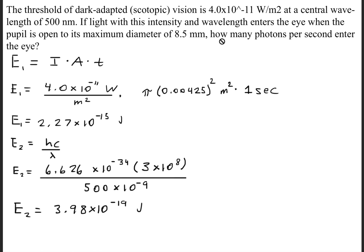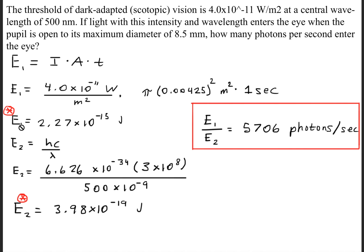Now the question is asking how many photons per second enter the eye. In order to do that, we're going to take the two energies and find the ratio between the two of them. We'll take the first energy and divide that by the second energy, and this will give us an answer of 5,706 photons per second.